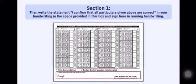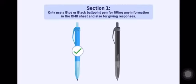Then write the statement 'I confirm that all particulars given above are correct' in your handwriting in the space provided in this box and sign here in running handwriting. Only use a blue or black ballpoint pen for filling any information in the OMR sheet and for giving responses.